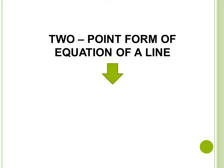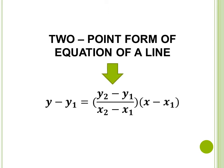This is y minus y sub 1 is equal to (y sub 2 minus y sub 1) over (x sub 2 minus x sub 1) times (x minus x sub 1). Dito lang natin i-substitute yung ating given two points to get the equation of a line. Remember this two-point form of equation of a line.